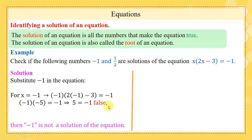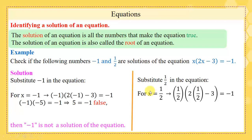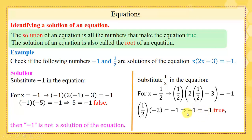What about 1 over 2? Let us substitute 1 over 2 in the equation, replacing x by 1 over 2, to get 1 over 2 times 2 times 1 over 2 minus 3. We reduce the left side to get minus 1 equals minus 1. So we have a true statement. This means that 1 over 2 is a solution of the equation.